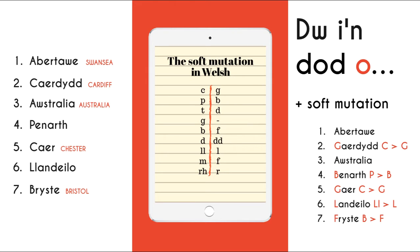To say 'I am from Cardiff' in Welsh, you would say, Dwi'n dod o Gaerdydd. Let's look at Australia next. Australia starts with the letter A — it's not on the list of letters that mutate, so it would stay the same: Dwi'n dod o Australia. Now, number four — Penarth. Penarth starts with the letter P, and the letter P changes to B. So to say 'I'm from Penarth' in Welsh, you'd say, Dwi'n dod o Benarth.